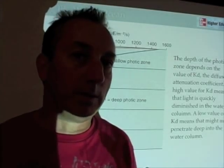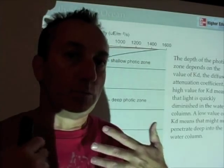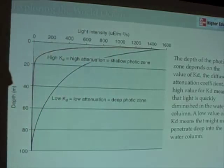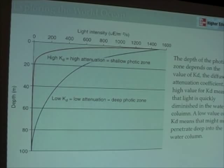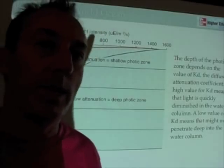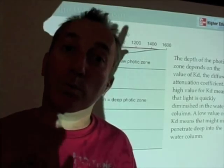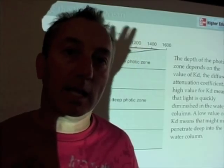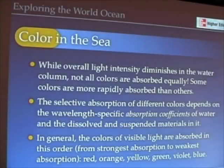Think about why this matters practically. If you have a lot of runoff from land preventing light from reaching the sea bottom, you end up with a shallow photic zone, and any plants or seaweeds growing at those depths can no longer survive. From an environmental standpoint, understanding attenuation helps us understand photosynthesis, productivity, and human impacts on the ocean. Our activities can reduce light in the water column and have significant negative consequences.